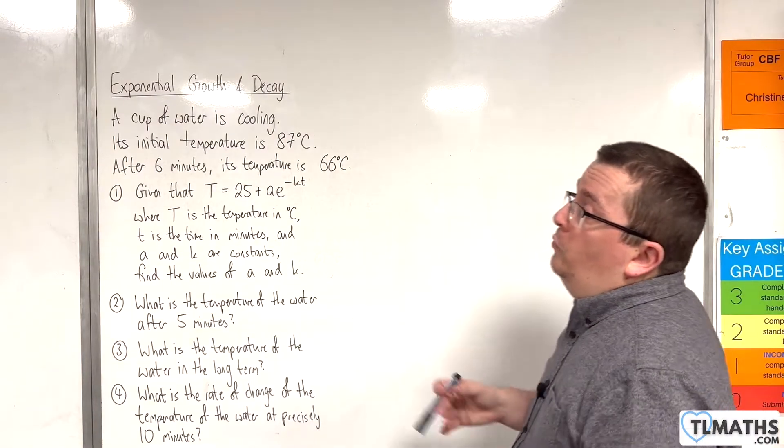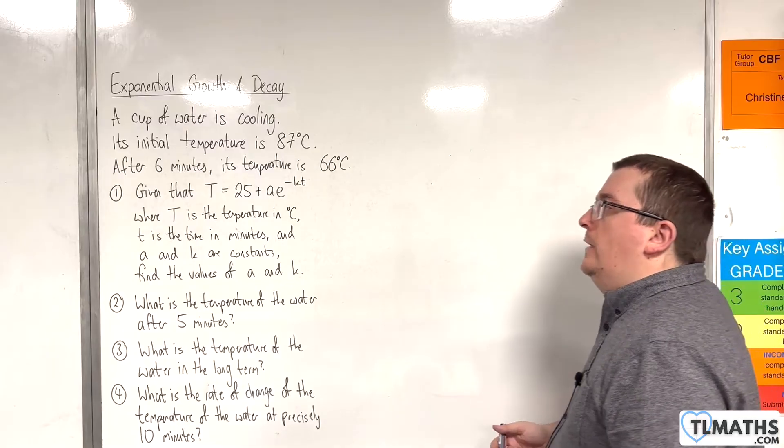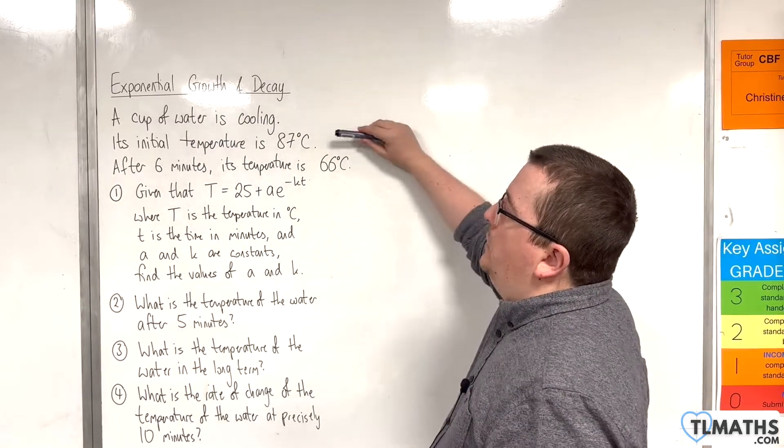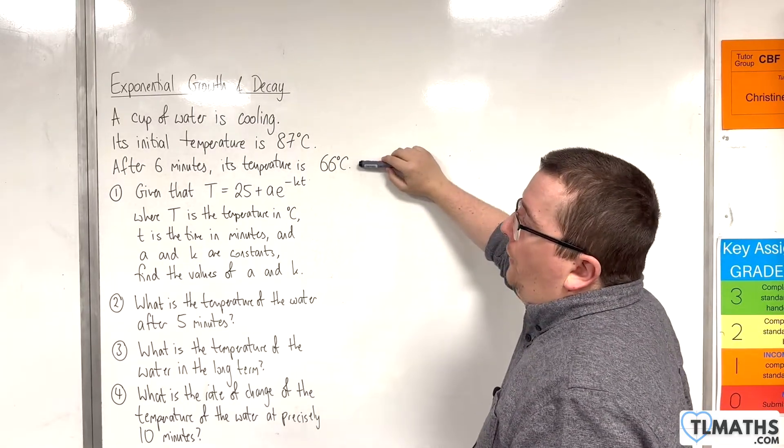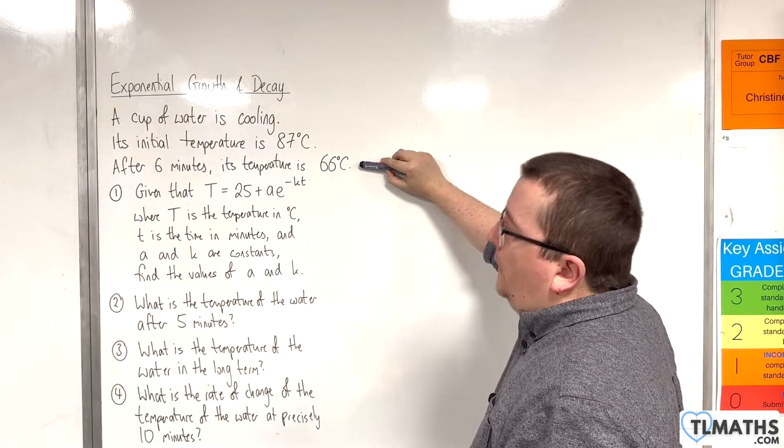So in this video we have a cup of water that is cooling. Its initial temperature is 87 degrees centigrade. After 6 minutes its temperature is 66 degrees centigrade.